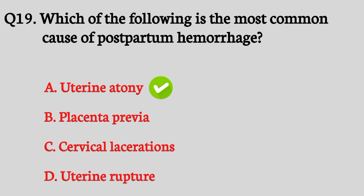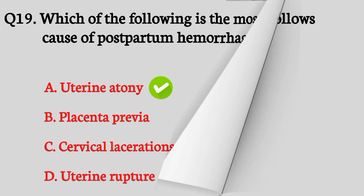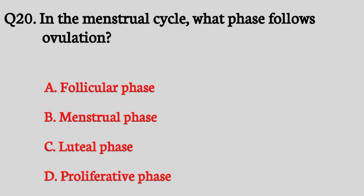Question number twenty. In the menstrual cycle, what phase follows ovulation? The right answer is option C: Luteal phase.